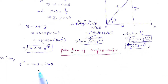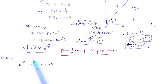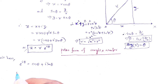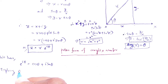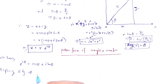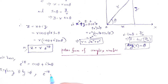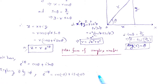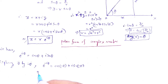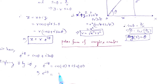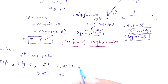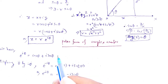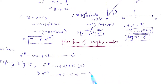If we replace theta by minus theta in Euler's formula, we get e to the power minus i theta equals cos(minus theta) plus i sin(minus theta), which gives e to the power minus i theta equals cos theta minus i sin theta. Let the original equation be equation 1 and this one be equation 2.